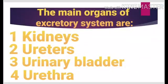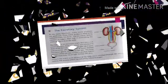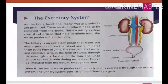The main organs of the excretory system are: number 1, kidneys; number 2, ureters; number 3, urinary bladder; and number 4, urethra. These are actually the major organs of the urinary system.